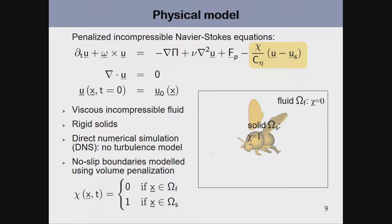We solve the incompressible Navier-Stokes equations with no-slip boundary conditions at the surface of the insect — the wings and body — which can have complex shapes. Because the shape can be so complex, we use the volume penalization method, which is a convenient tool. We modify the momentum equation by adding a penalty term. The mask function χ contains all geometrical information: it equals 0 inside the fluid and 1 inside the solid.